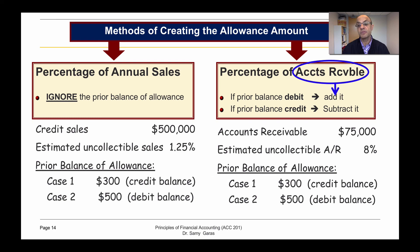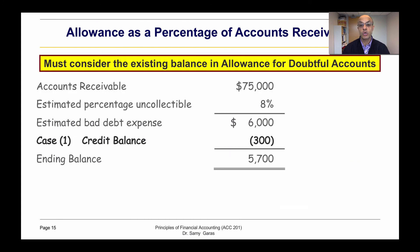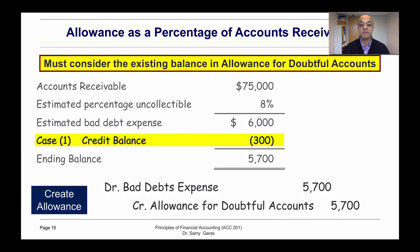If we decide to use the accounts receivable method, then we have to consider the prior balance. We have seventy-five thousand, eight percent uncollectable, and two balances — credit for three hundred and debit for five hundred. For the credit balance, we subtract it: we multiply seventy-five thousand times eight percent to get six thousand, minus the credit balance of three hundred, equals five thousand seven hundred.